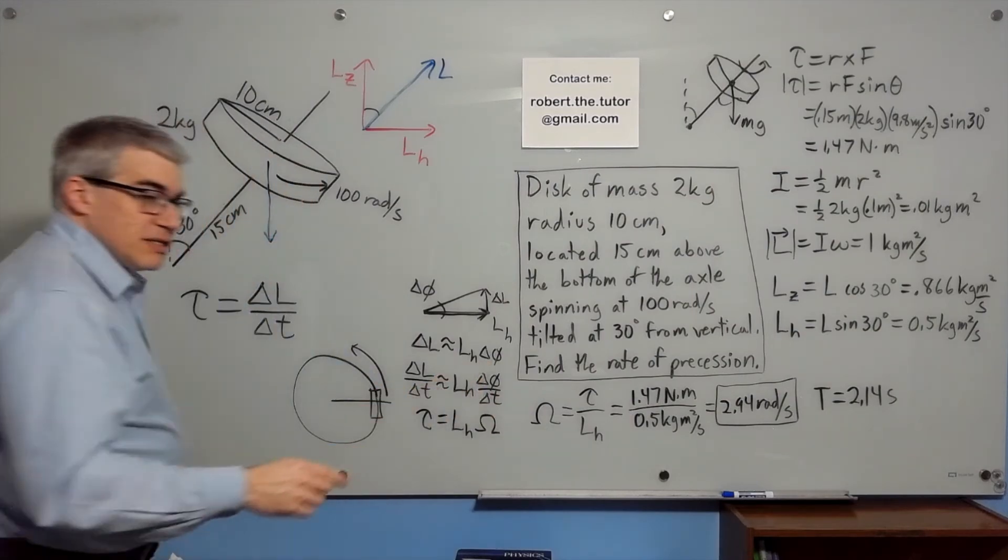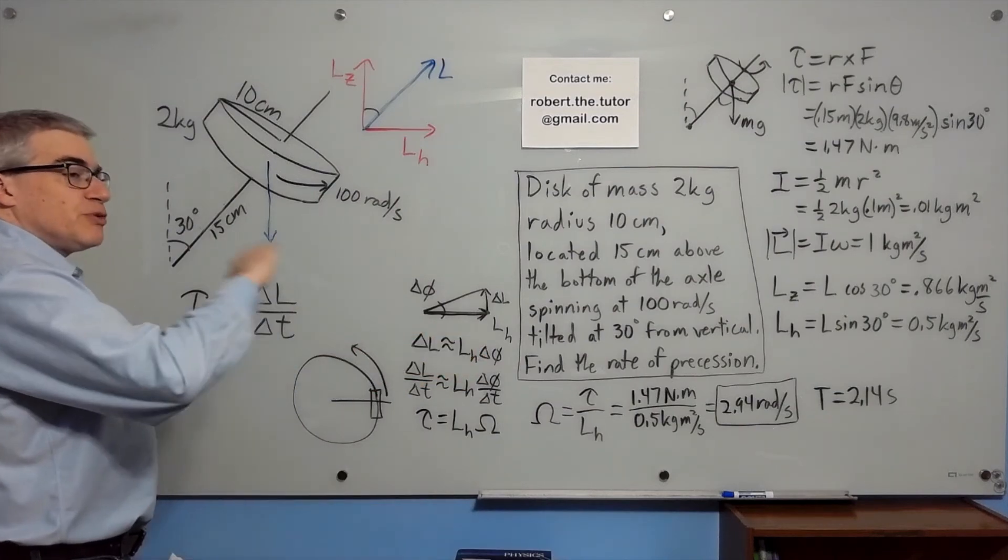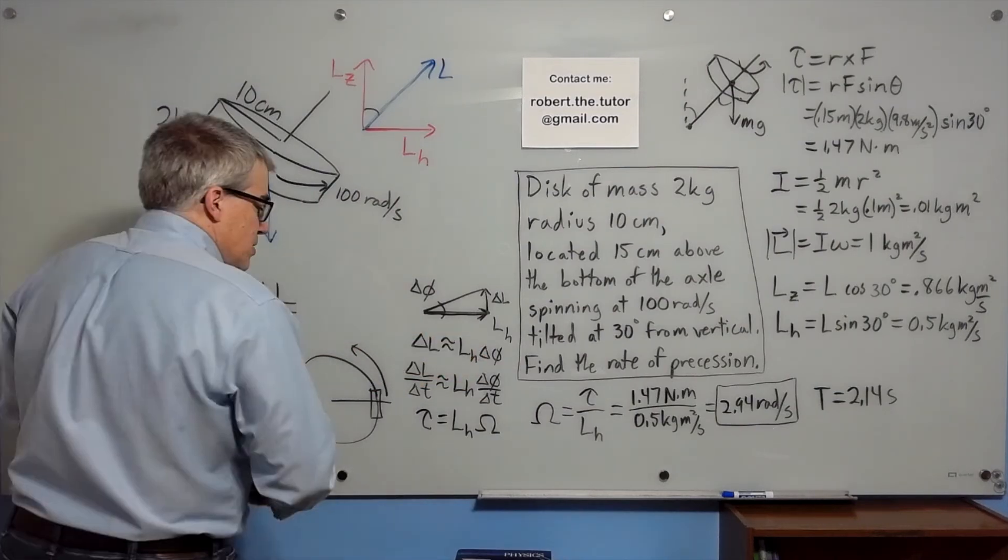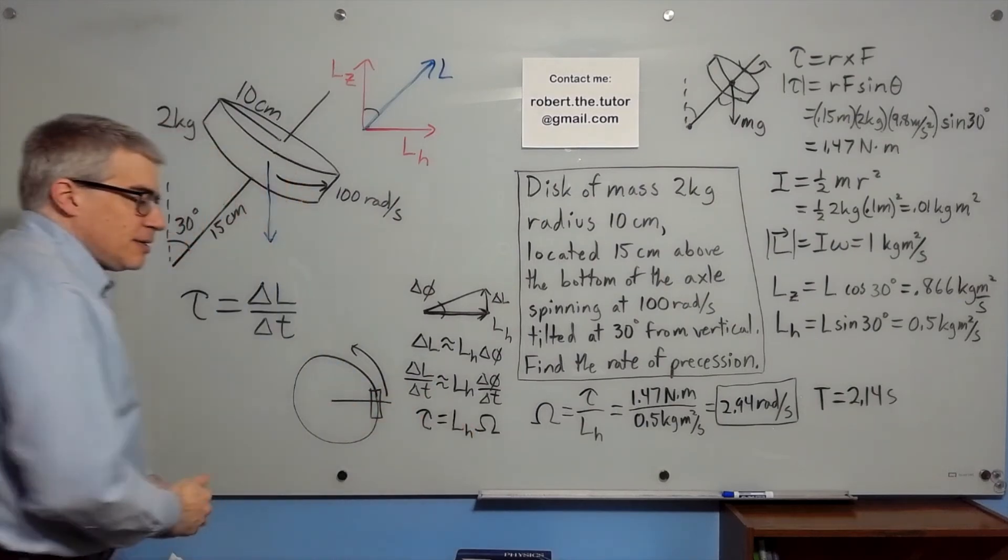But delta phi over delta T is, when I wrote capital omega, it's the rate of precession. It's how fast the thing is wobbling around in a circle. So the torque is going to equal L horizontal times that.